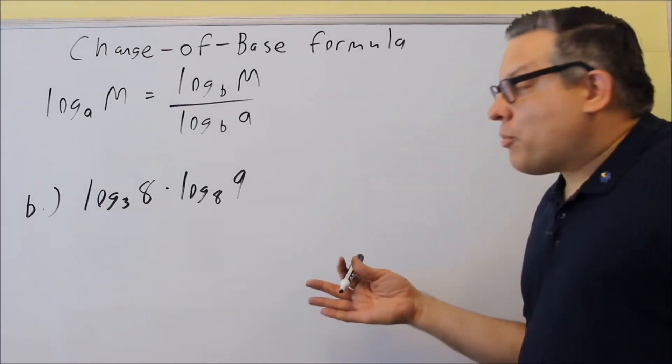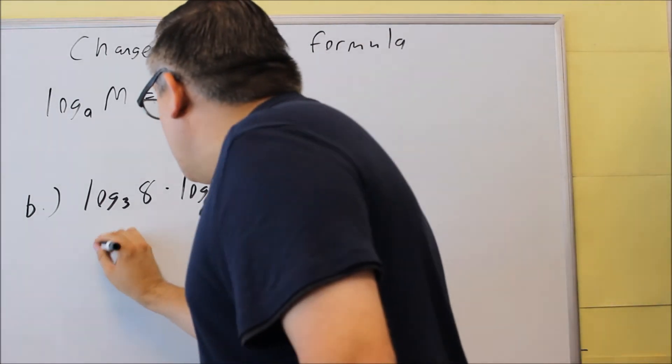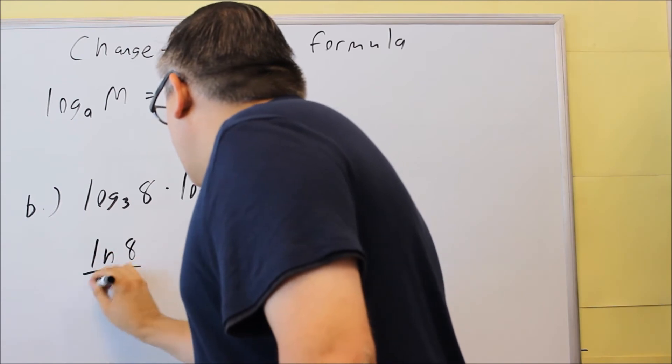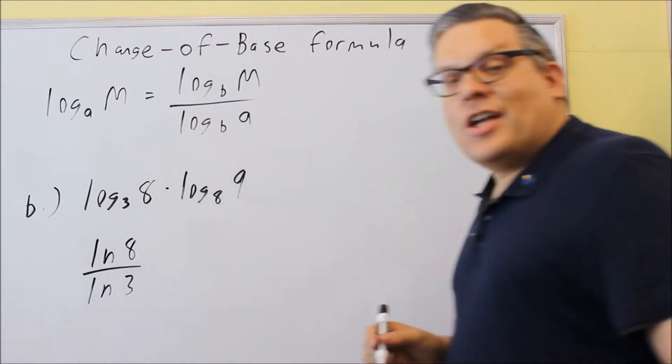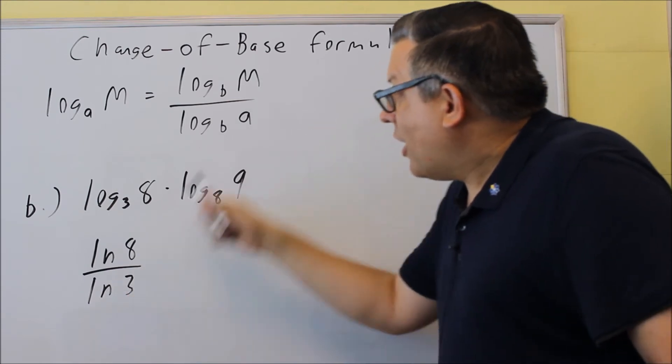So again, you can either do the whole problem with LOG or LN. Doesn't matter. I'm going to use LN, but just know that you could use either one. Now if I use the formula in this case, I'm going to do LN of the big number, the M here, divided by LN.